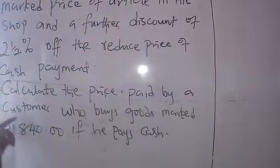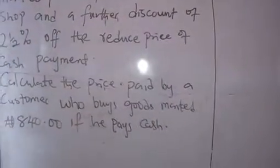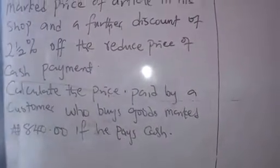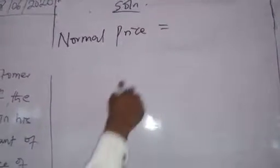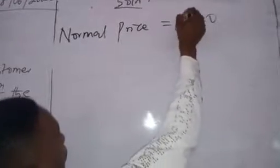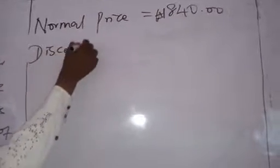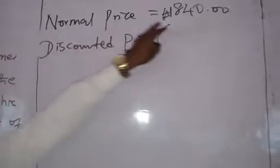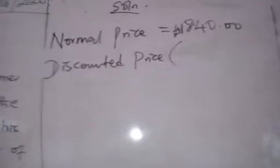They say you should calculate the price paid by a customer who buys goods marked 840 Naira if he pays cash. So if that person pays cash, he is going to receive a discount. The normal price of the goods is 840 Naira. Now, 840 Naira means it is 100% of what they are selling the goods. Now, discounted price: he gave 10% discount.